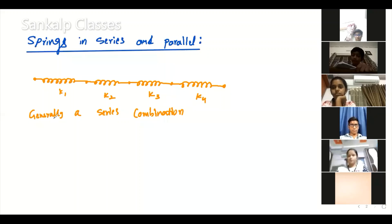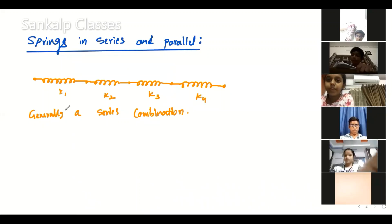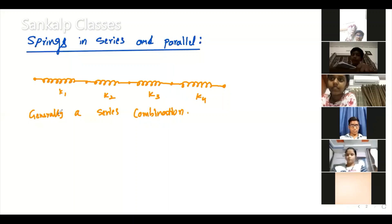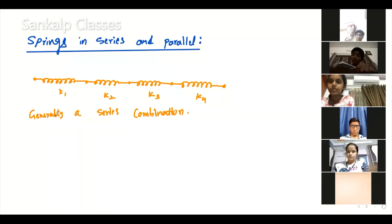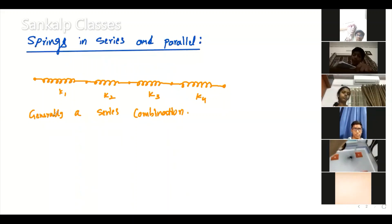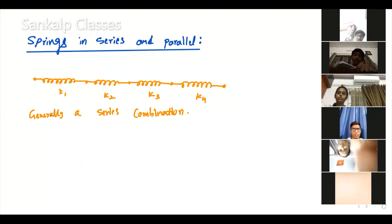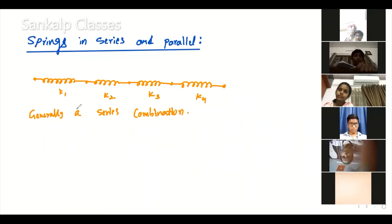Generally, what is k? k is known as the spring constant. The spring constant depends on certain parameters that I already discussed in a previous class.